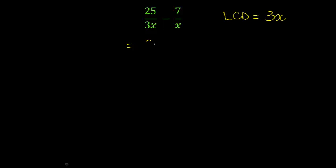So the first fraction will stay the same because I've already got a denominator of 3x. But in order to get a denominator of 3x here, I need to multiply the top and the bottom by 3. So I end up with 21 over 3x. 25 minus 21 is 4, so my final answer is 4 over 3x.